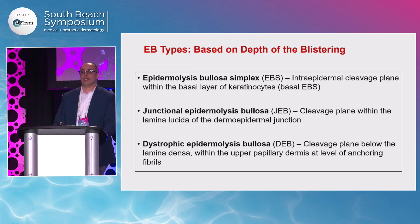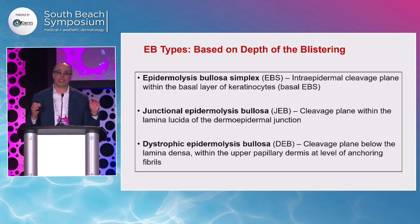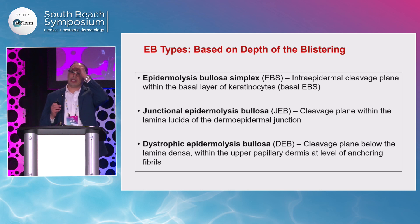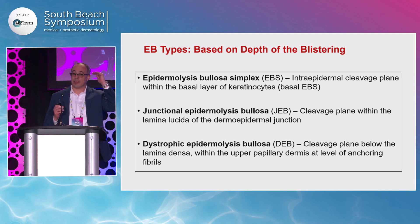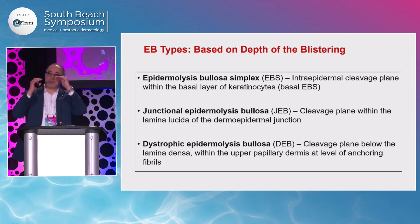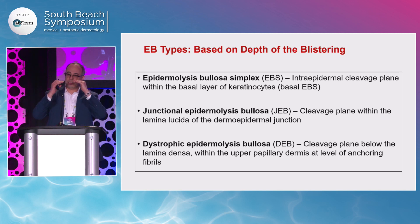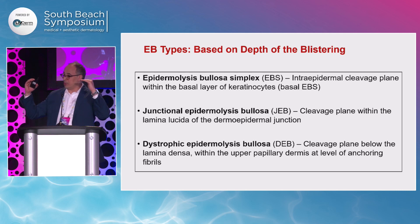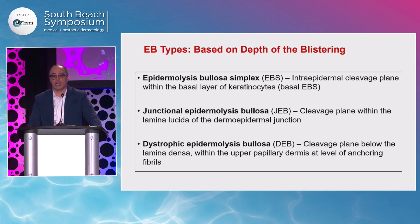EB is categorized into three main groups based on the level of the split in the skin. If the split happens in the epidermis — the superficial layer — we call it EB simplex. If the split happens in between the epidermis and dermis, we call it junctional EB. If the split happens in the superficial layer of the dermis, or lamina densa, we call it dystrophic EB. In general, junctional and dystrophic EB are the most severe forms; EB simplex tends to be much easier to heal — it's kind of superficial.